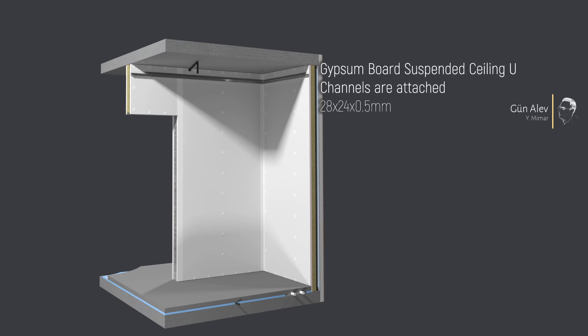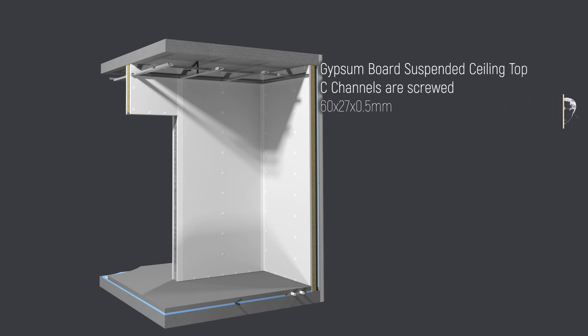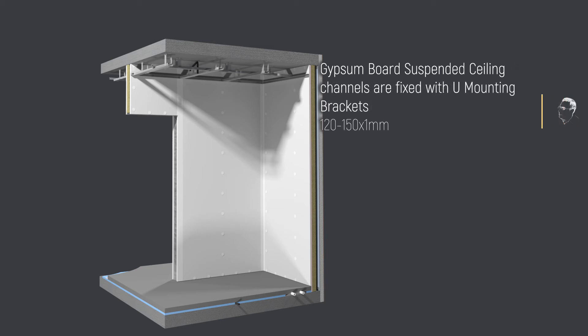Suspended ceiling U channels are attached. Suspended ceiling C channels are screwed. Suspended ceiling top C channels are screwed and U mounting brackets are anchored.